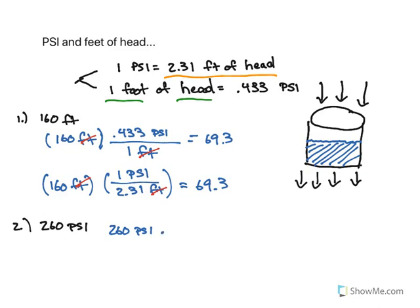So again, you can either use either one of the conversions: 260 PSI, one over 0.433 PSI. The PSI's cancel out and you're going to be left with 600.5 feet.